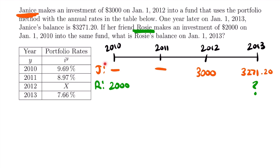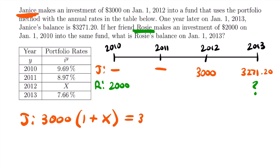This is where the information about Janus's account comes into play. We know her initial investment and the balance one year later, from 2012 to 2013—the exact period for which we need the portfolio rate to calculate Rosie's accumulated value. We can use these two known values to solve for that portfolio rate. For Janus, to find the accumulated value in 2013, we take her $3,000, multiply it by one plus the portfolio rate for 2012 (represented as X), and that gives us $3,271.20. By setting up this equation, we can solve for X and then use it to accumulate Rosie's $2,000.